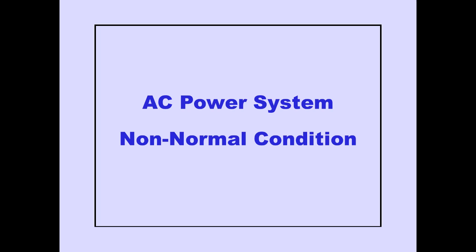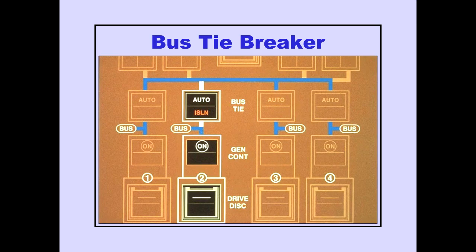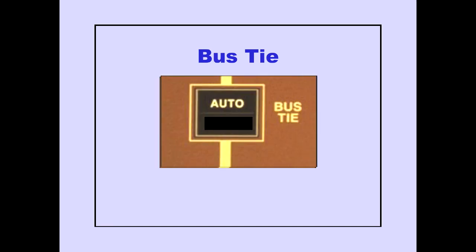We will now discuss AC power system non-normal conditions. The ICAS advisory message, Electrical Bus Isolation, is displayed when a bus tie breaker is open; the AC bus isolation light also illuminates. The message and light are inhibited during auto land. If the generator fails to remain in phase with the synchronous bus, the bus tie breaker automatically opens to isolate the generator and its bus from the synchronous bus. If it is capable of powering its own bus, the generator remains isolated and on. Pushing the associated bus tie switch off resets the logic; pushing the switch back to auto enables the bus tie breaker to close if the fault has been cleared.